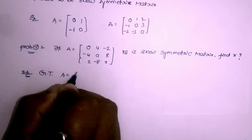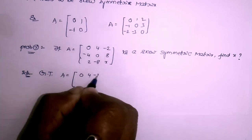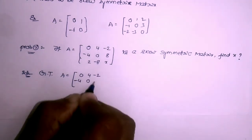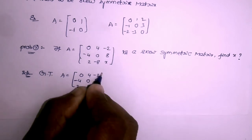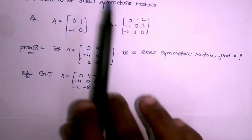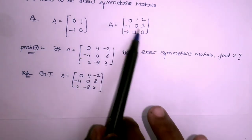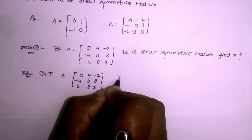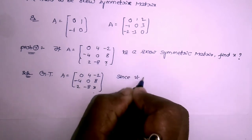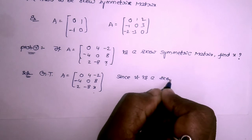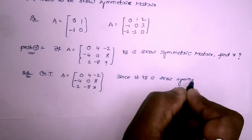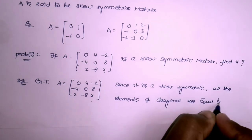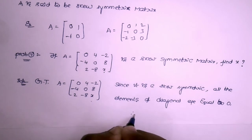Seventh question: if A = [[0,4,-2],[-4,0,8],[2,-8,x]] is a skew-symmetric matrix, find the value of x. Since this is a skew-symmetric matrix, all diagonal elements are equal to 0. Therefore, the value of x = 0. That is the answer.